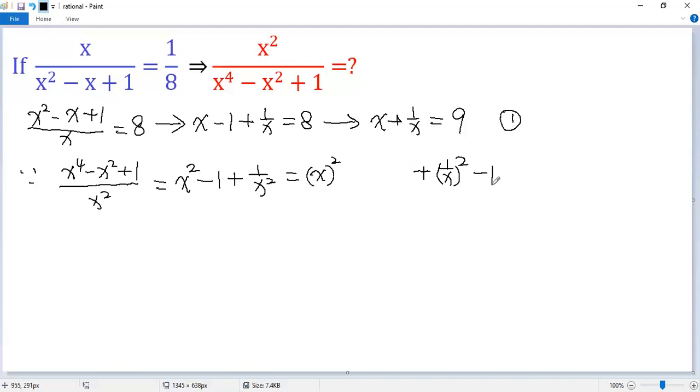We write it as x to the power of 2 plus 1 over x squared, and then minus 1. Now, to use condition 1, we try to make a perfect square, so we need to add 2ab.